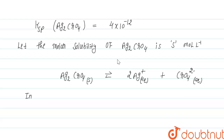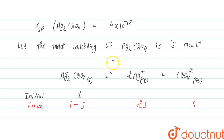Initially, the solid is present as 1 mole. Since it is a sparingly soluble salt, when s moles dissociate, 2s moles of Ag⁺ are formed and s moles of CrO₄²⁻ are formed. So at equilibrium: [Ag⁺] = 2s and [CrO₄²⁻] = s.